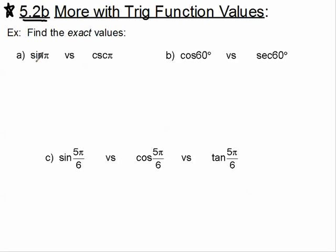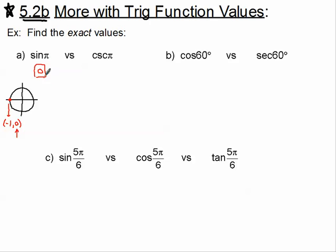The first problem: I'd like to compare the sine of pi versus the cosecant of pi. We need to know where pi is first, so I'm going to draw a quick little unit circle. Pi is right here, and that ordered pair is the point negative 1, 0. If we're talking about negative 1, 0, I instantly know that my sine value is 0, because the cosine is the x-coordinate and the sine is the y-coordinate. So the sine of pi is 0.